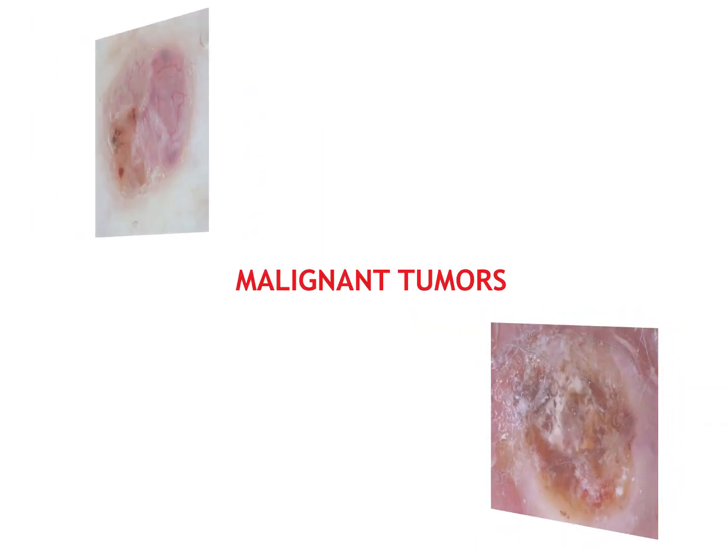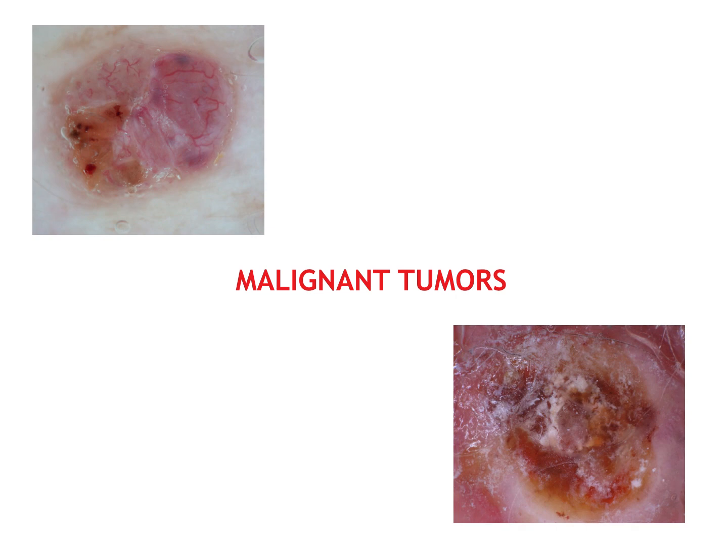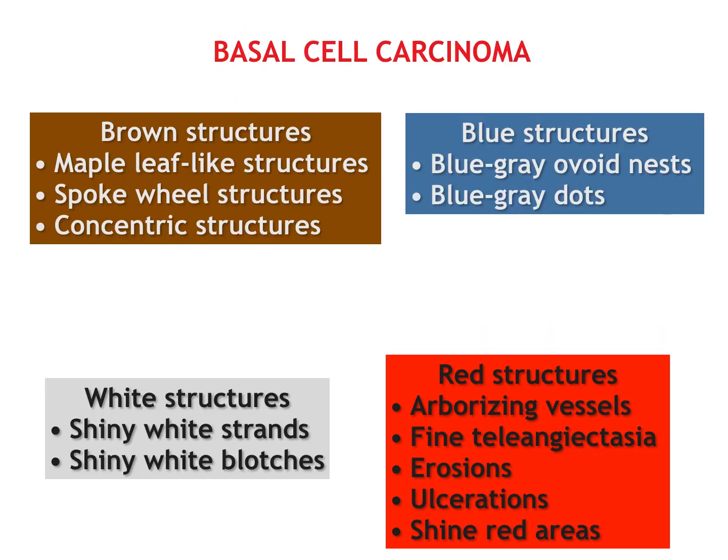Now let's go on with cutaneous malignancies. Basal cell carcinoma is dermoscopically easy to diagnose, especially when it shows pigmented structures, blue or brown. Some of them are pathognomonic, like maple leaf-like structures.